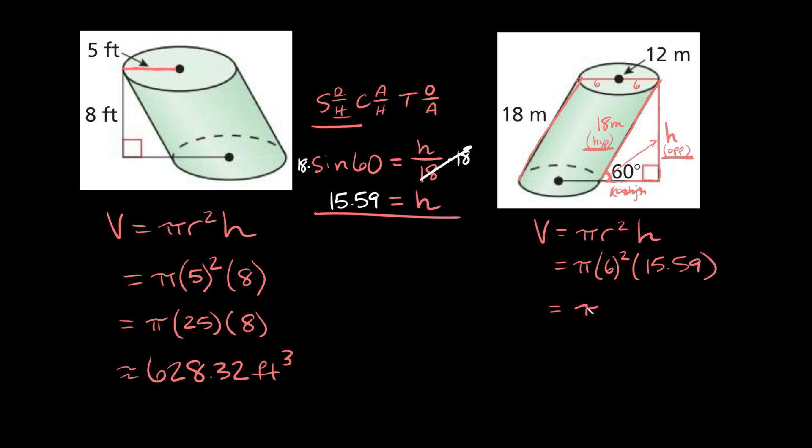So we're going to plug in 15.59 for the height. So then here we're going to get pi times 6 squared. 6 squared is 36, and we're multiplying by 15.59. And if you multiply this all out, you'll get that this is equal to approximately 1,763. And the units we're working with are meters, so here we're going to get meters cubed.